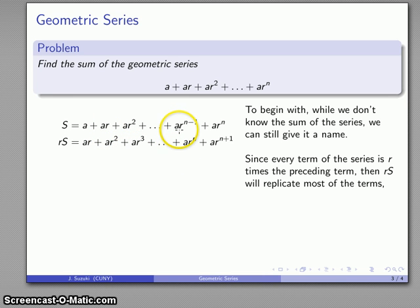And this term that we included here that was there but we didn't bother to write the first time becomes AR to the N. This last term, AR to the N, when I multiply by R, becomes AR to power N plus one.